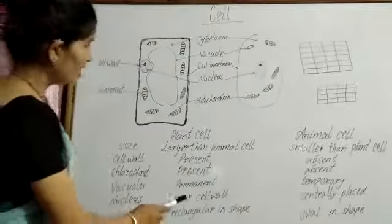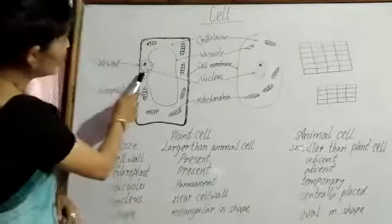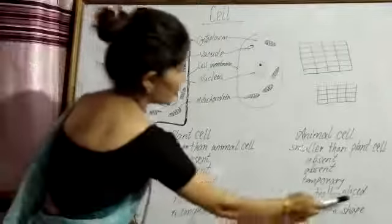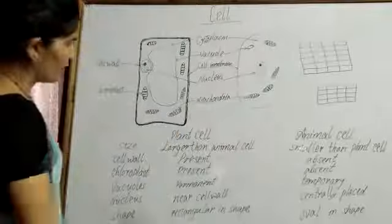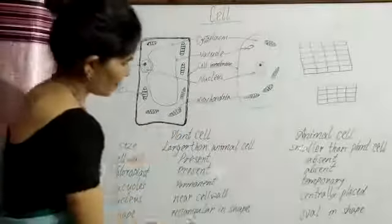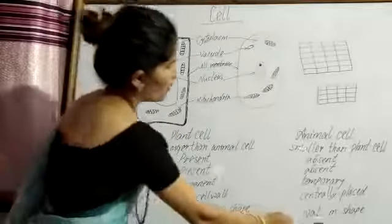Nucleus: near cell wall, centrally placed. Shape: rectangular in shape, oval in shape.